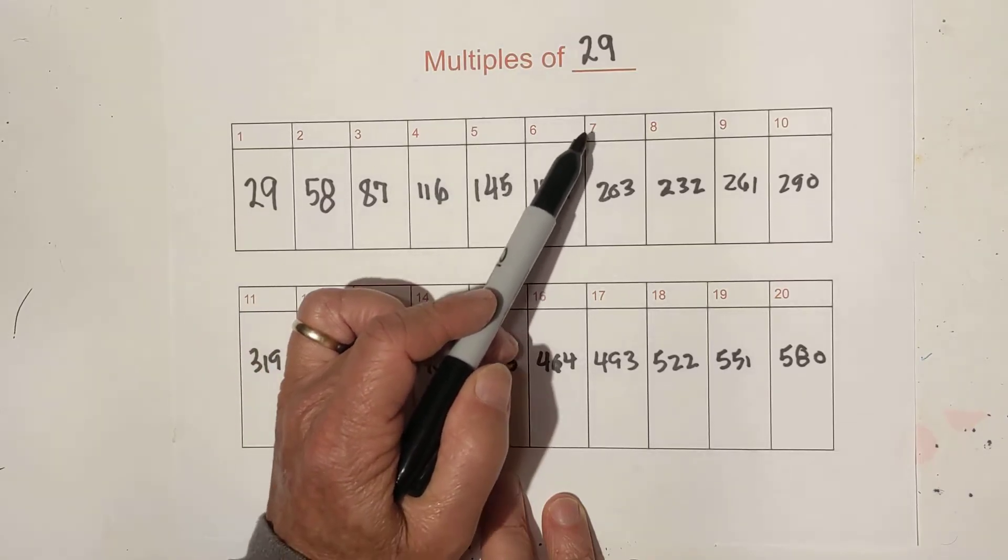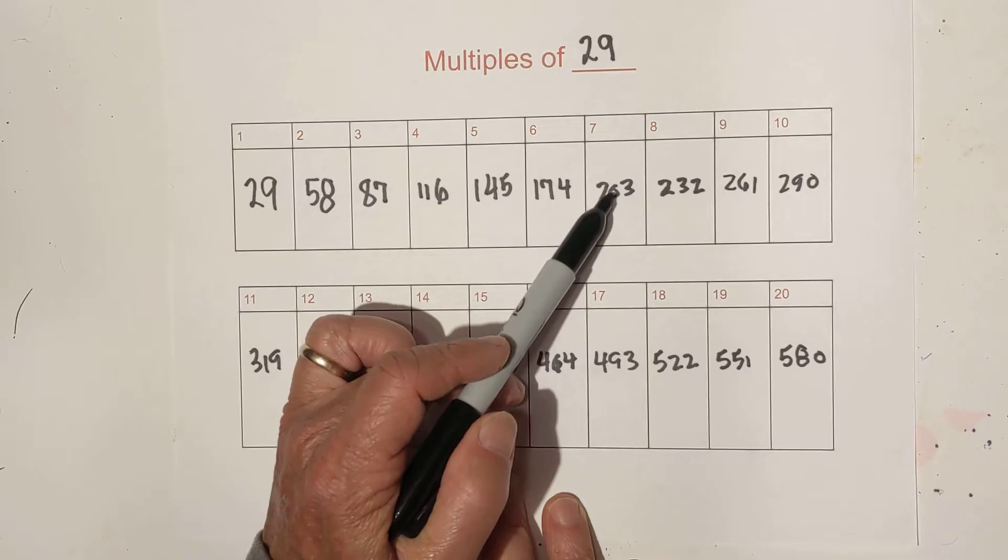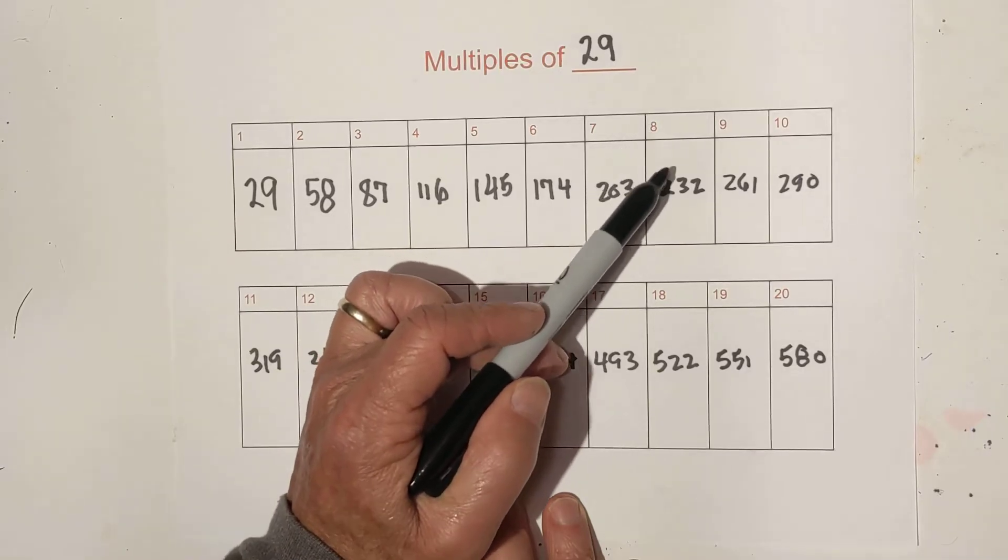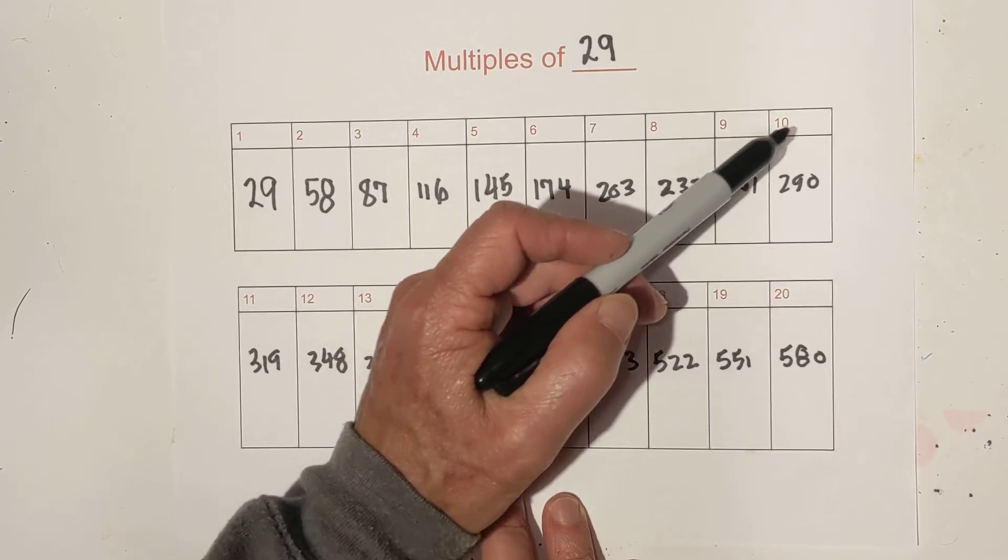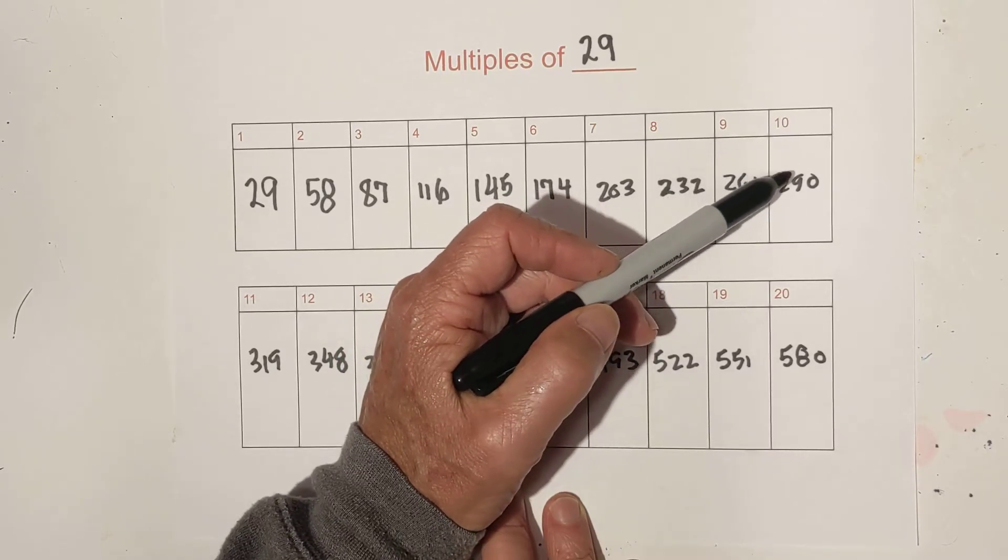6 times 29 is 174, 7 times 29 is 203, 8 times 29 is 232, 9 times 29 is 261, and 10 times 29 is 290.